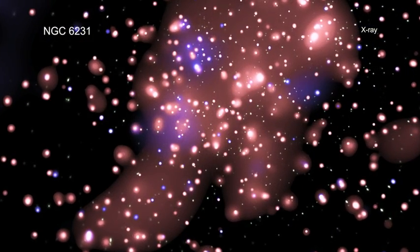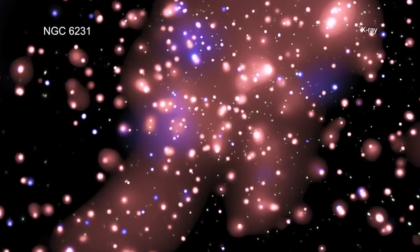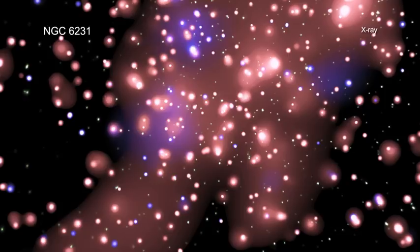NASA's Chandra X-ray Observatory has been used to identify the young sun-like stars in NGC 6231, which have, until recently, been hiding in plain sight.